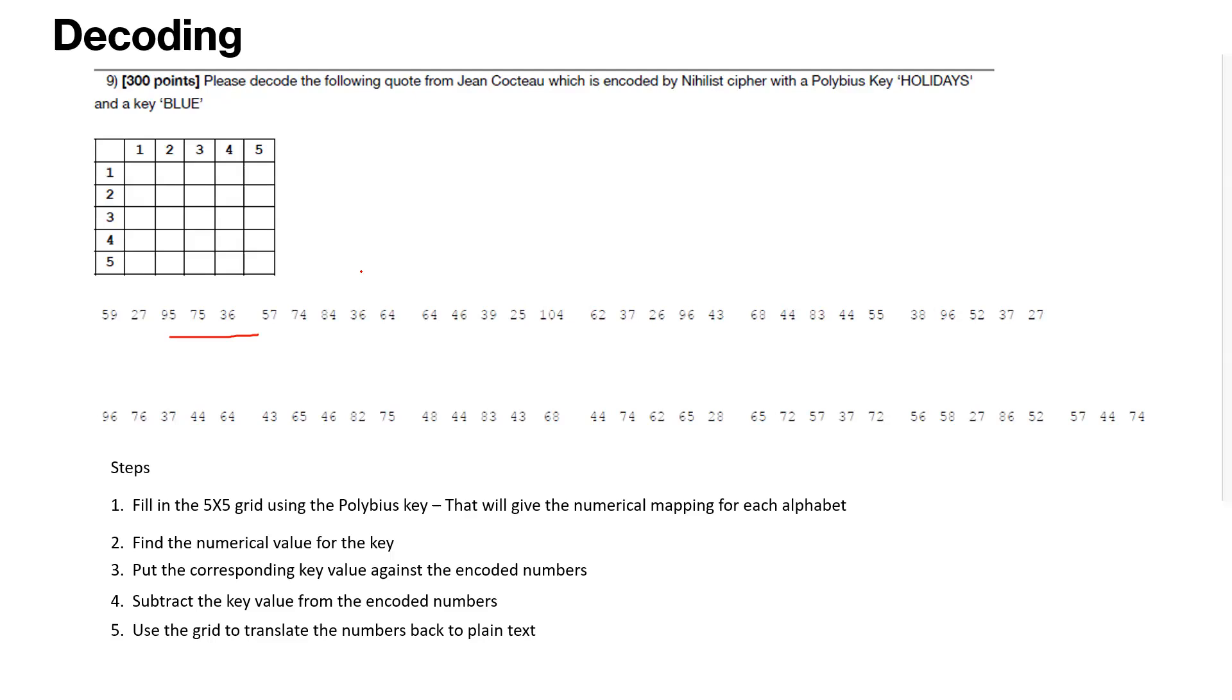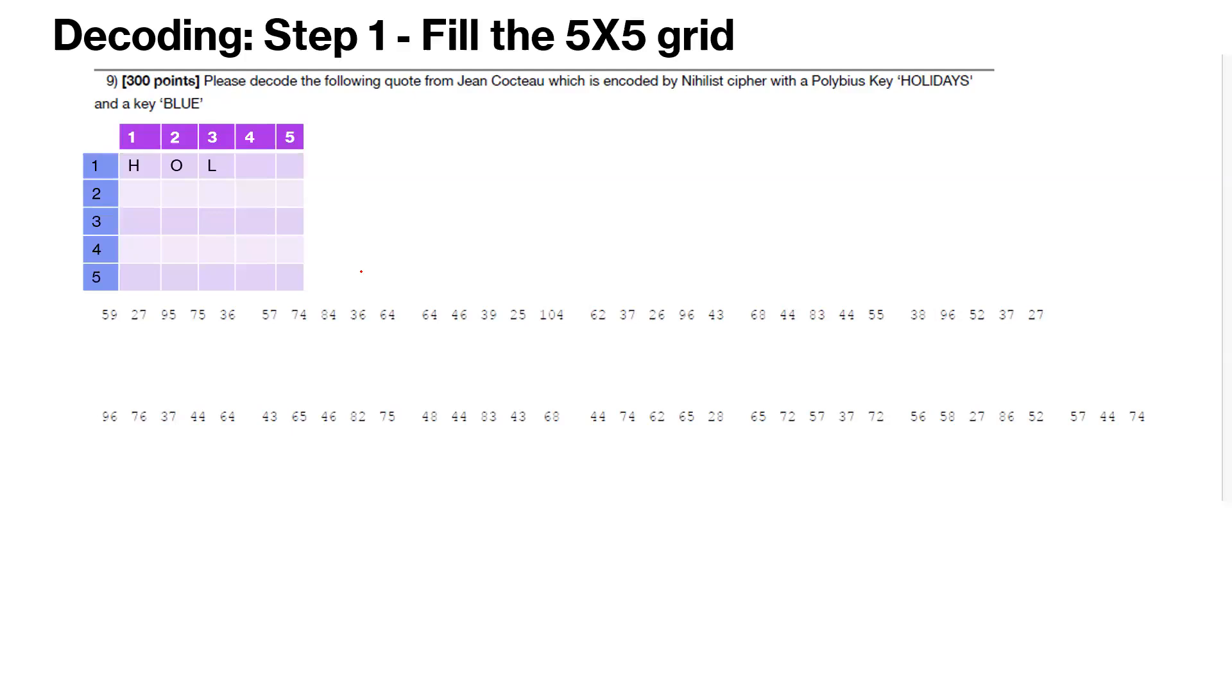So let's get started. We will start filling in the polybius key in the grid. So here, holidays is the polybius key. So we start by filling in the rows. So we start with first row here, H-O-L-I.